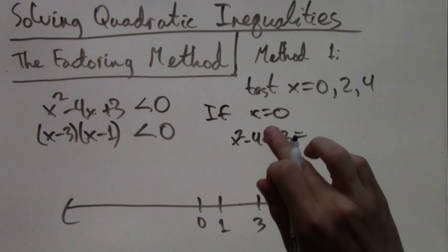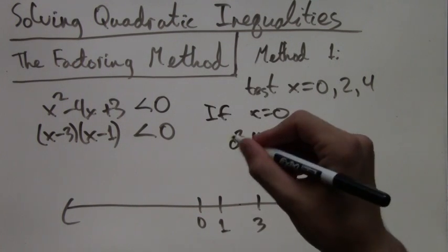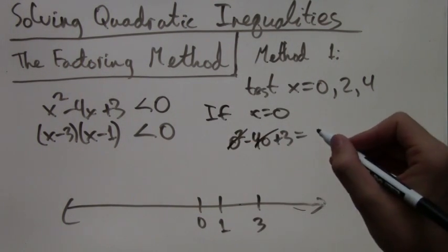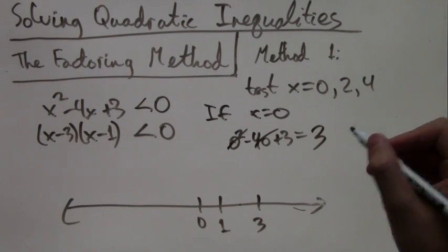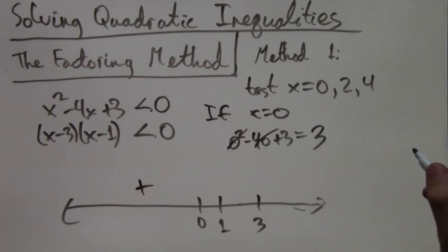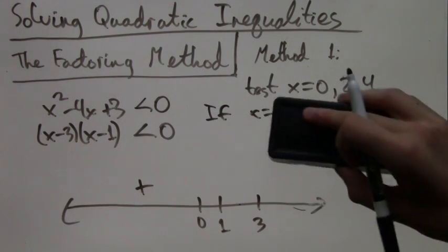So x equals 0 is to the left of the roots. When we plug it in, we just get positive 3. So that little segment, the interval to the left, gets a plus sign. It's positive.